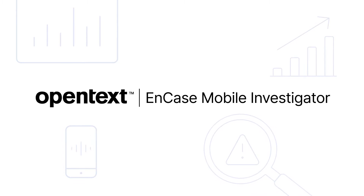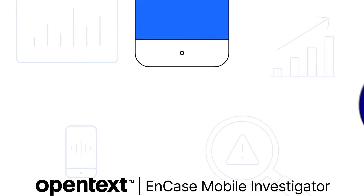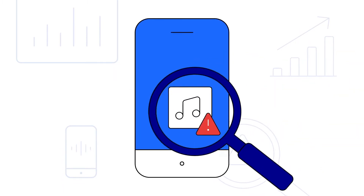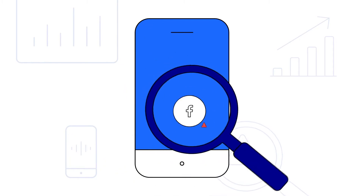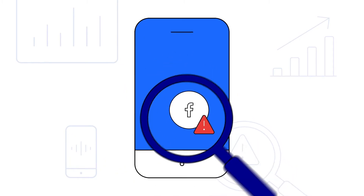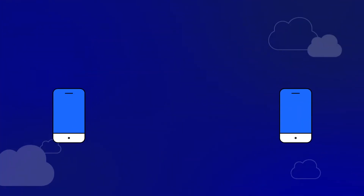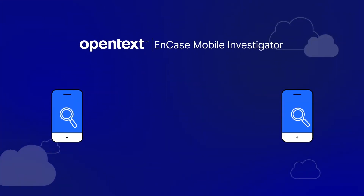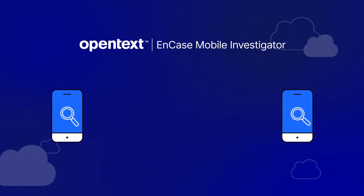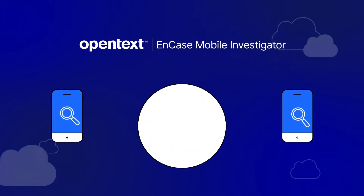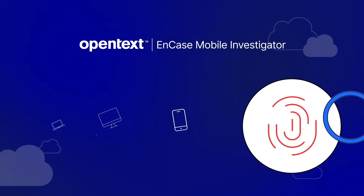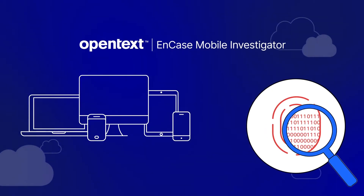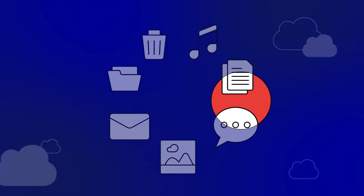OpenText NCASE Mobile Investigator enables easy analyzing, reviewing, and reporting on relevant mobile device evidence quickly and efficiently. Forensic investigators can conduct a logical or physical acquisition and examination from over 35,000 mobile device profiles and securely analyze critical evidence such as call records.